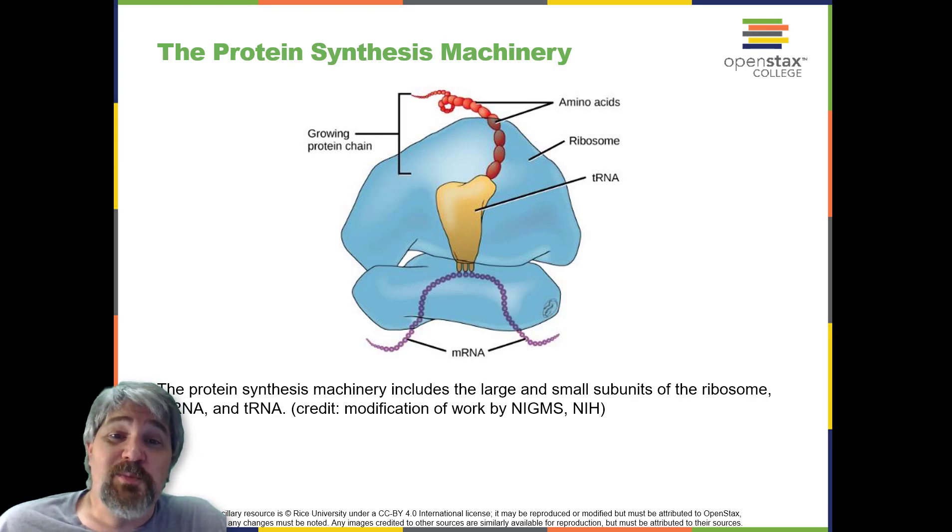Ribosomes are located in the cytoplasm in prokaryotes and in the cytoplasm and endoplasmic reticulum of eukaryotes. Ribosomes are made up of a large and a small subunit that come together for translation. The small subunit is responsible for binding the mRNA template, whereas the large subunit sequentially binds tRNAs, a type of RNA molecule that brings amino acids to the growing chain of polypeptide.